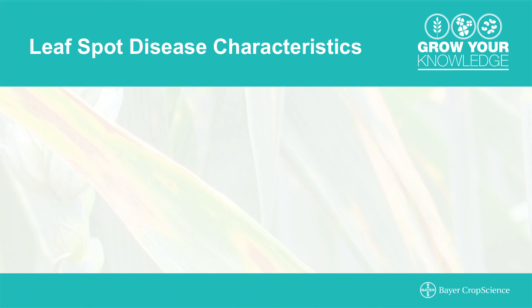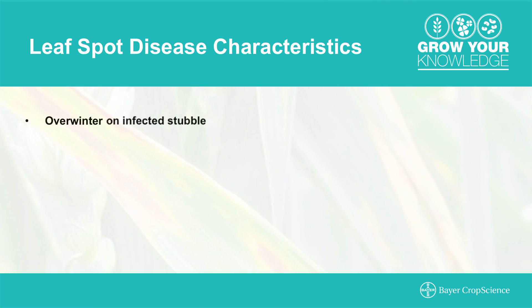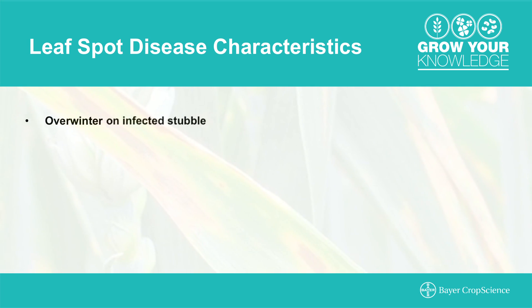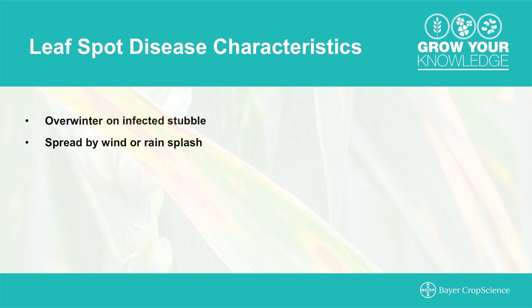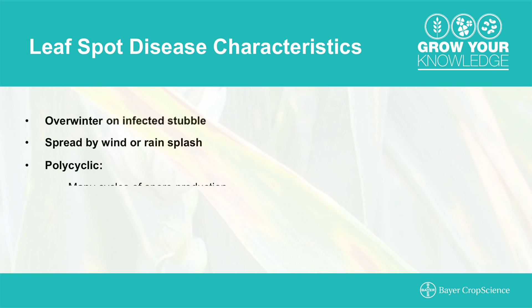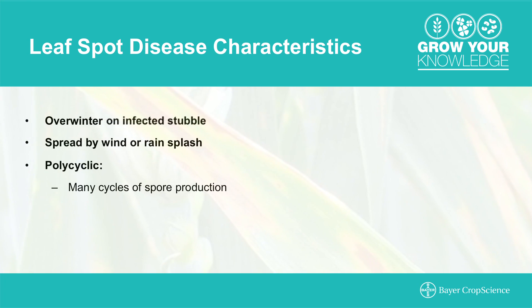The leaf spot diseases share a number of common characteristics. Generally, they overwinter on infected stubble and crop residue. Some can have a seed-borne component as well as a soil-borne component. Diseases are spread by wind and/or rain splash. A key common characteristic is that they're polycyclic, meaning that they have many cycles of spore production throughout the season.